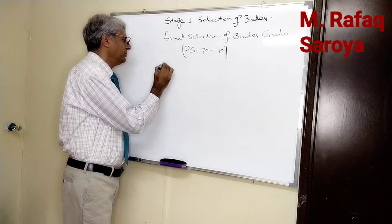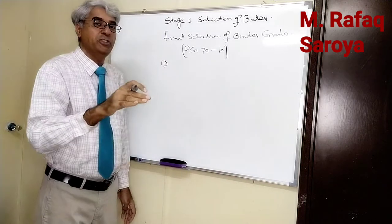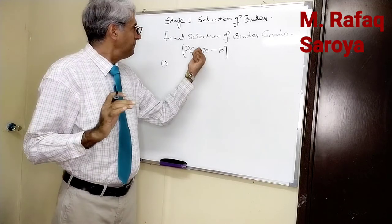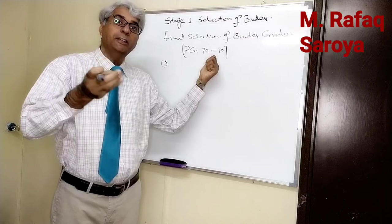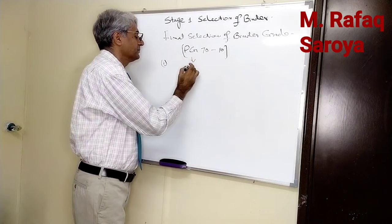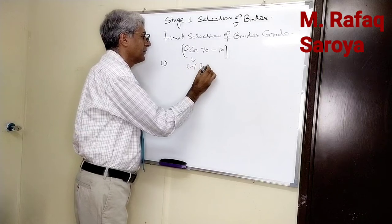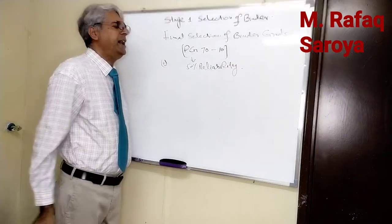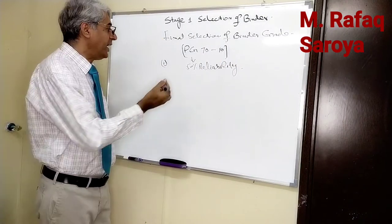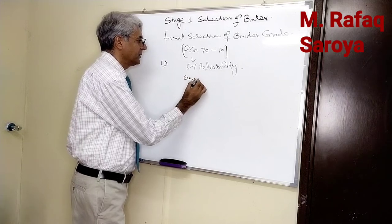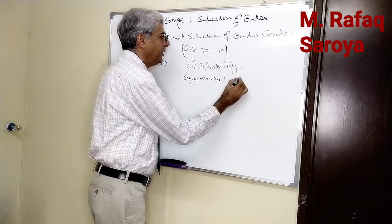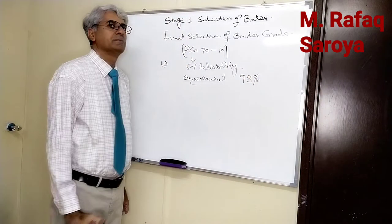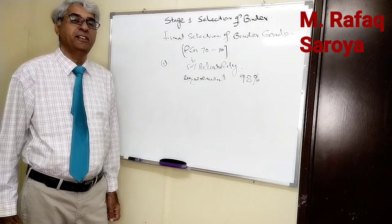We want in future that temperature should not fluctuate beyond this value. If 70 is taken, it has 50% reliability. But our requirement is 98% reliability.